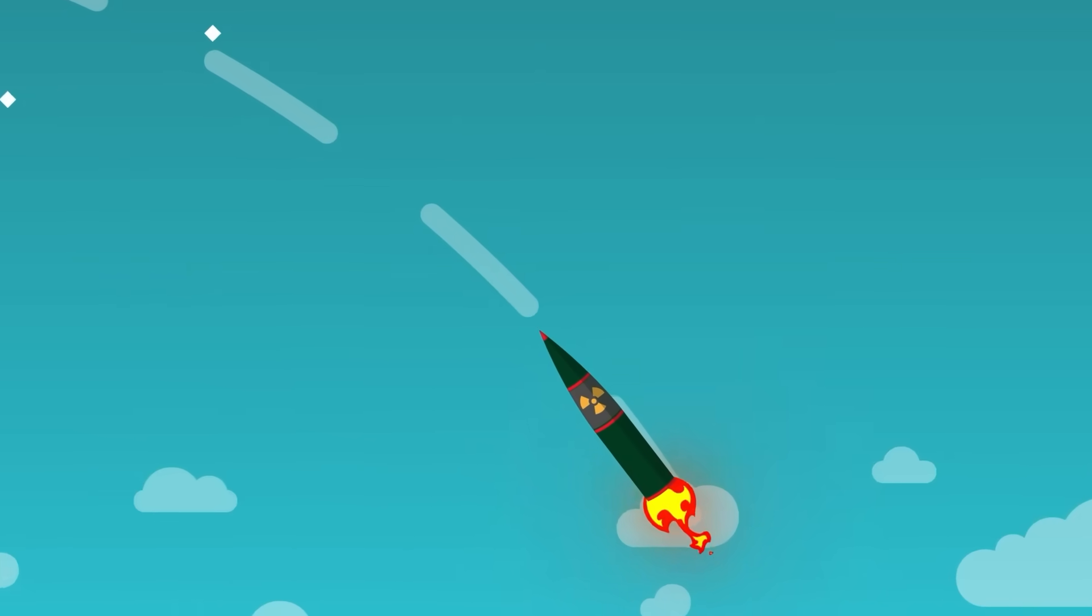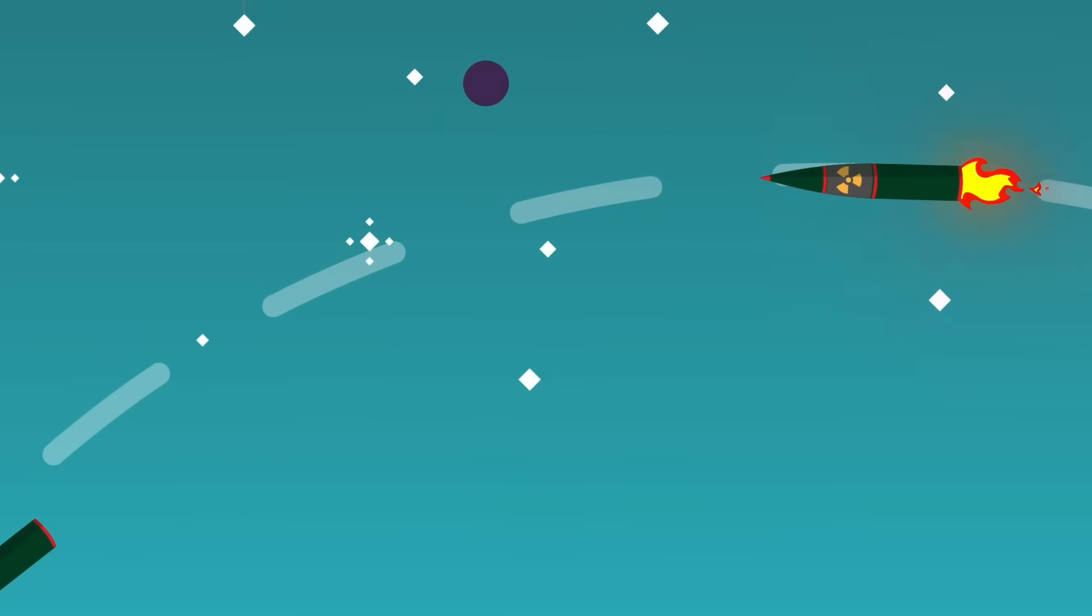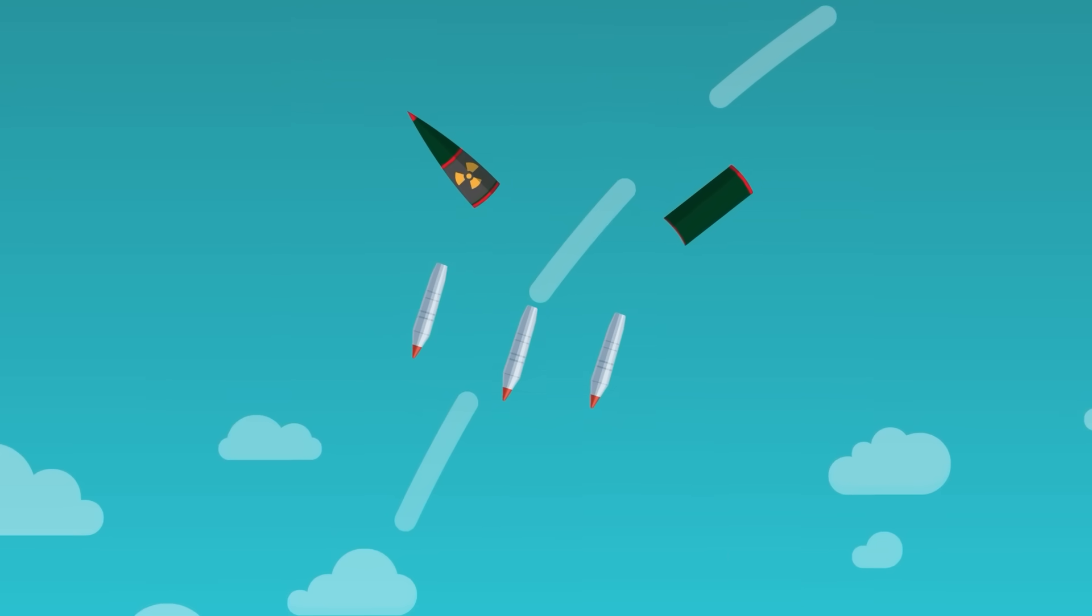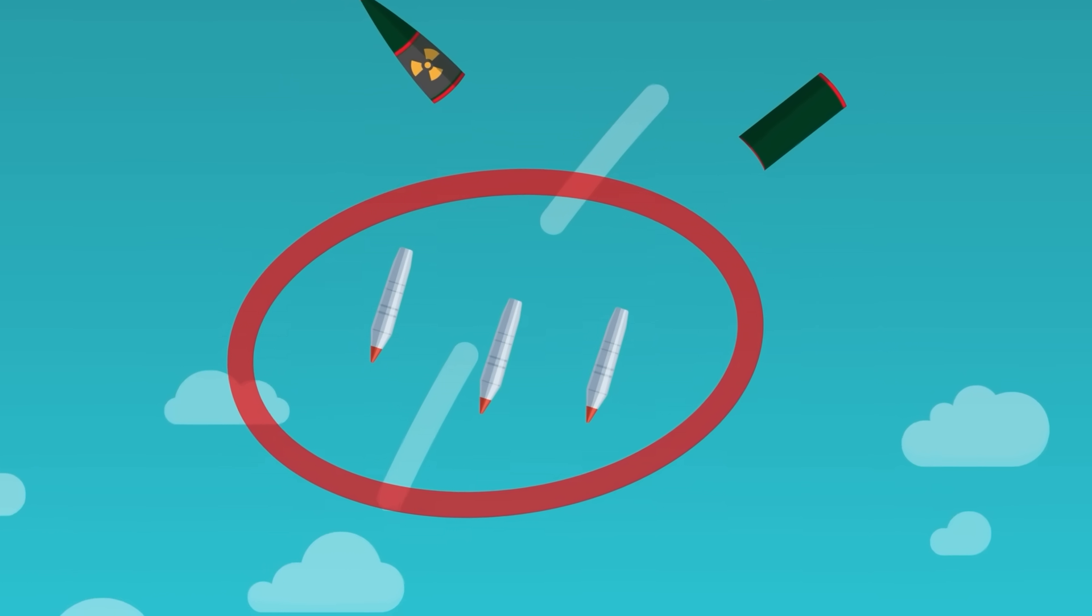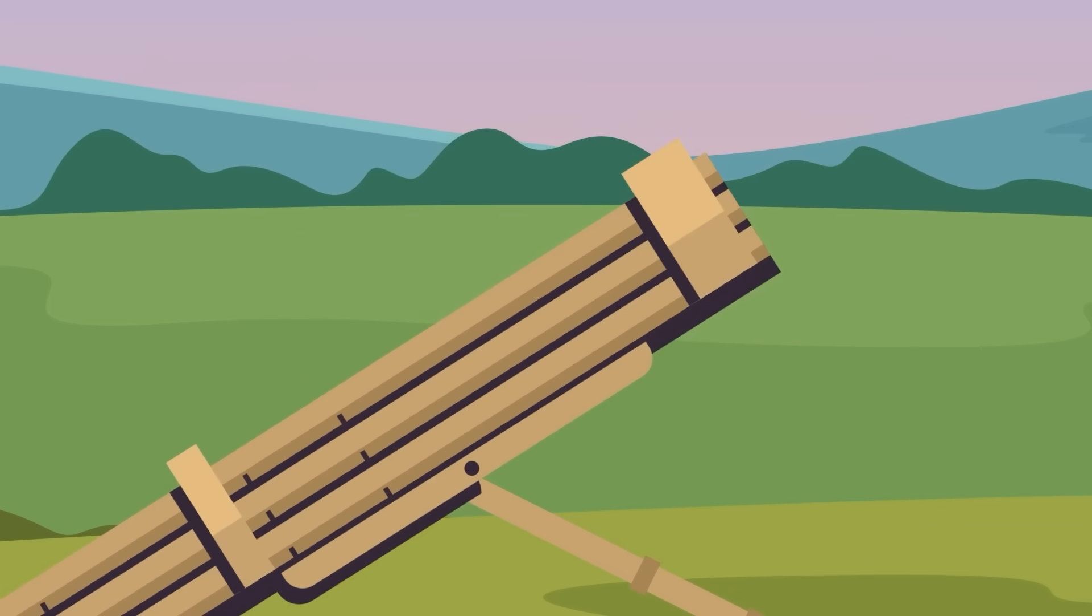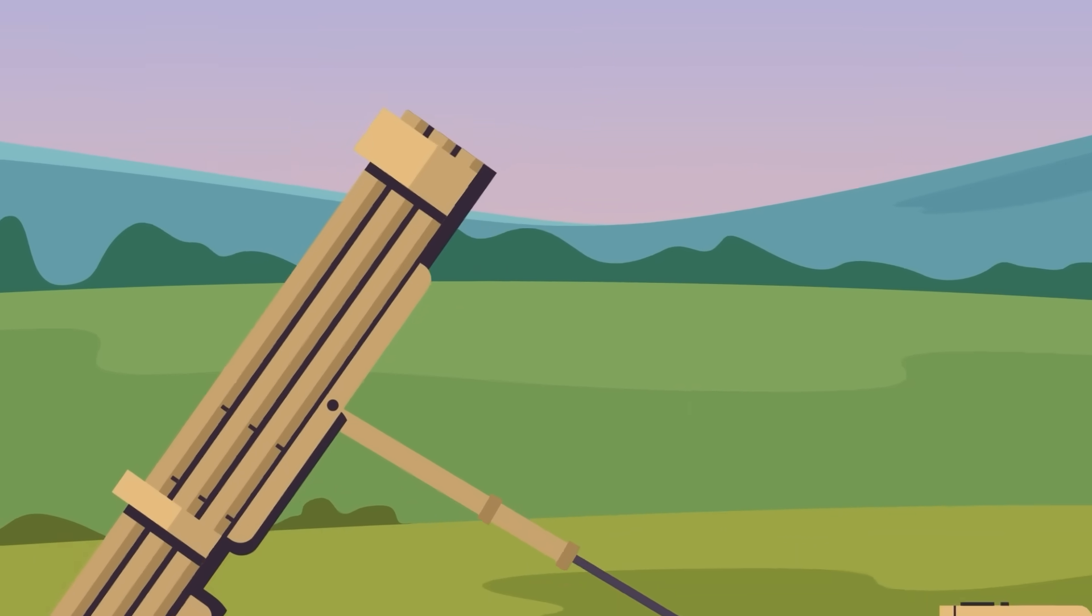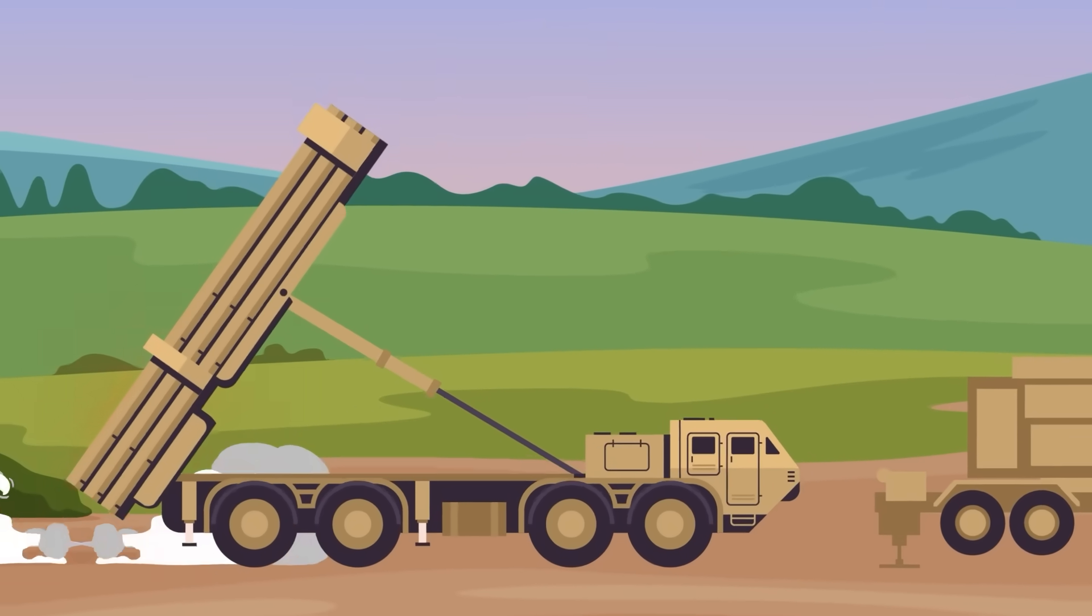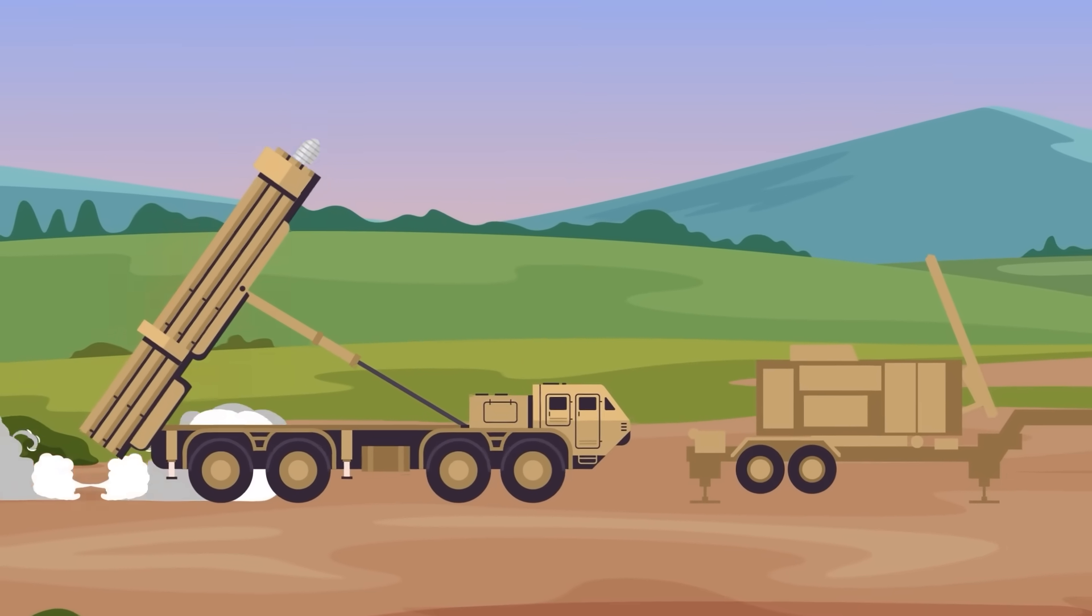But despite having limited range, THAAD remains the only viable option the US has in its current inventory to destroy ICBMs in its terminal phase, potentially. I say potentially because THAAD has been successfully tested in shooting down a range of ballistic missiles, but it has not completed a publicly known intercept of an ICBM.